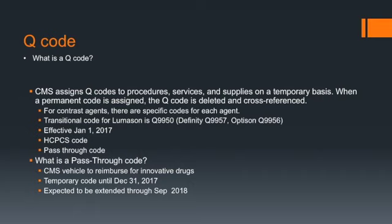A Q-code is assigned by CMS to procedures, services, and supplies on a temporary basis. When a permanent code is assigned, the Q-code is deleted and cross-referenced. The Q-code is a transitional contrast agent code with specific codes for each agent: the code for Lumison is Q9950, for DEFINITY is Q9957, and for Optison is Q9956. These codes became effective January 1st, 2017.